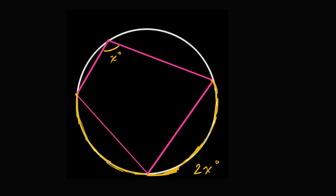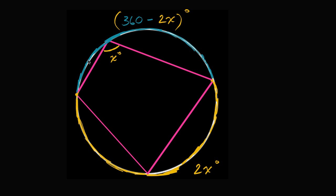If the measure of that arc is 2x degrees, what is the measure of the arc that completes the circle? If you go all the way around the circle, that's 360 degrees. So this blue arc is going to have a measure of 360 minus 2x degrees. The blue arc is all the way around minus the yellow arc — subtract out the yellow arc and you have this blue arc.